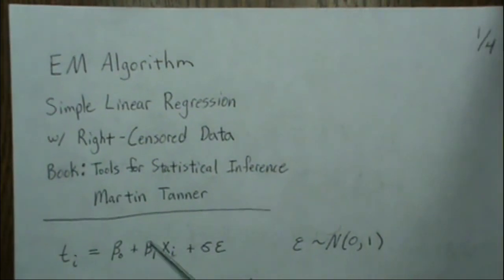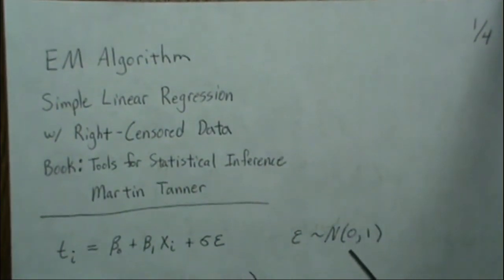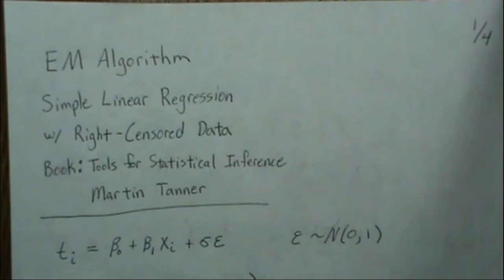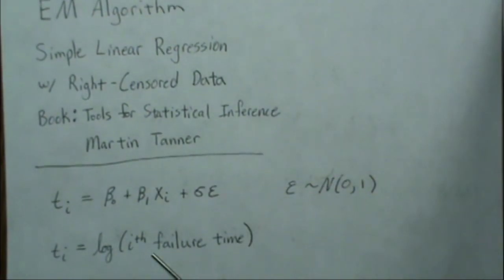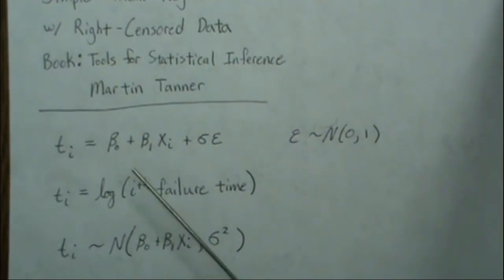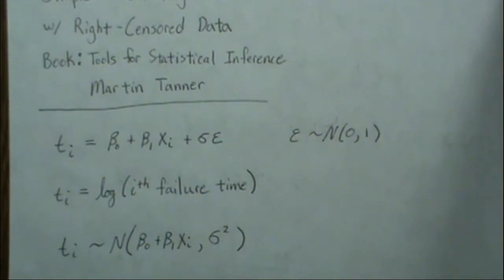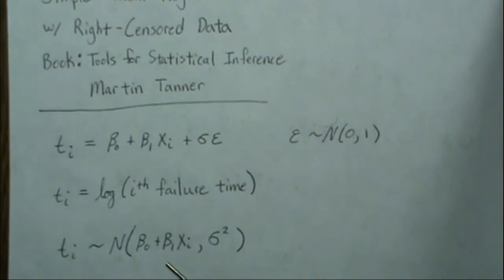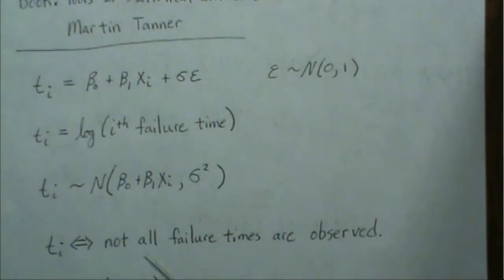The model is a simple linear regression where the error term is normal with mean zero and variance sigma squared. The variable ti is the log of the ith failure time, and based on that normal error term, we know the failure times are normally distributed. However, not all failure times are observed.